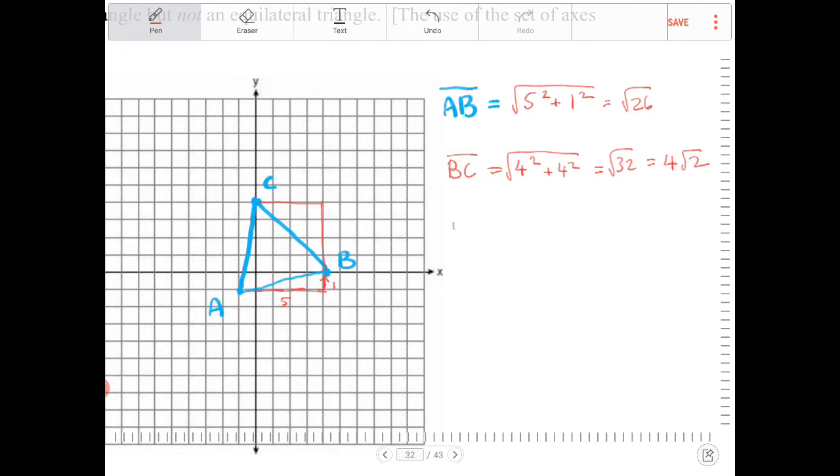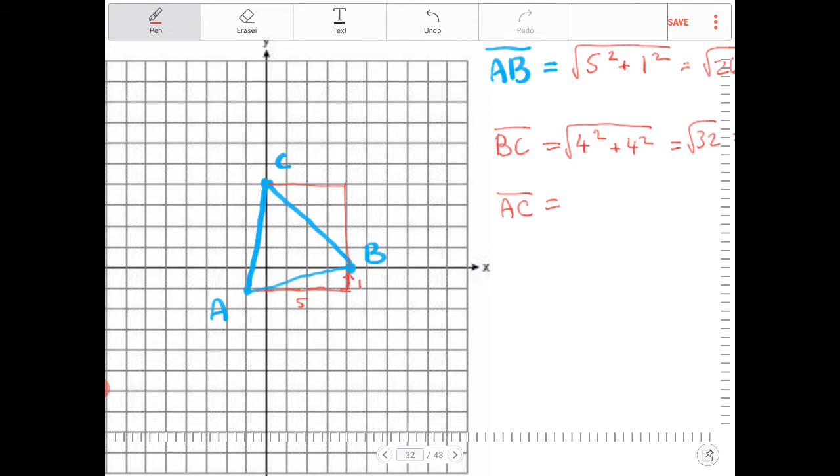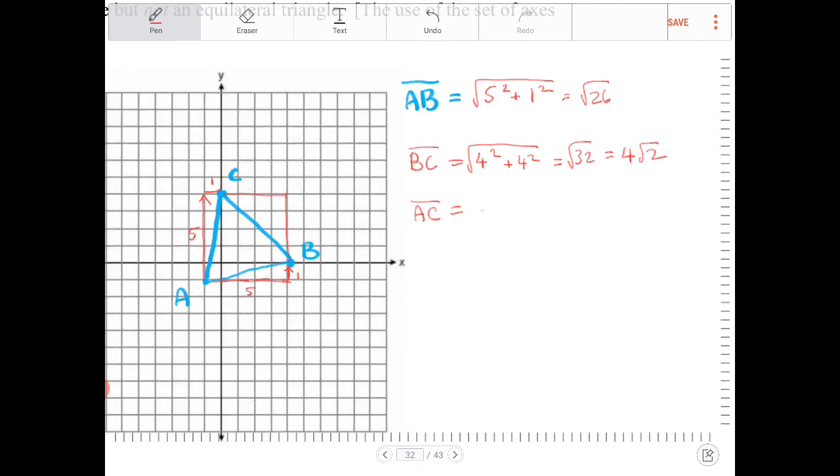And then the last segment there is AC. And what we're going to do is we're going to go up 2, 4, 1. So, we're going up 5 and over 1. So, this is going to be, again, 5 squared plus 1 squared is equal to square root of 26.